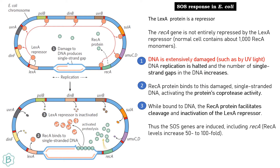As you can see here, LexA repressors are bound to the operator regions of the genes that are involved in the DNA repair system. Now, though LexA protein is bound to the operator of the RecA gene, some amount of RecA proteins are made. Normally, there are about 1000 RecA monomers present in E. coli.